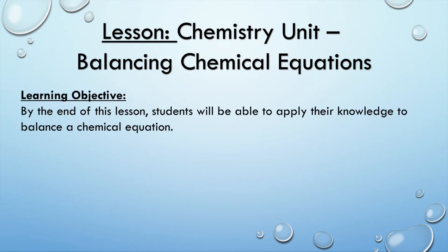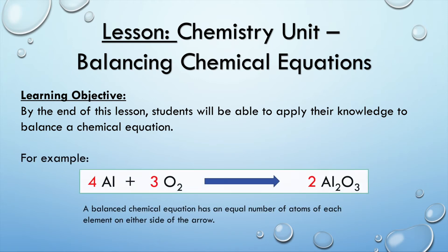Our learning objective states that by the end of this lesson, students will be able to apply their knowledge to balance a chemical equation. As context, this is an example of a balanced chemical equation — a balanced chemical equation has an equal number of atoms of each element on either side of the arrow. Students will use their knowledge of the periodic table and simple mathematics to complete this task.